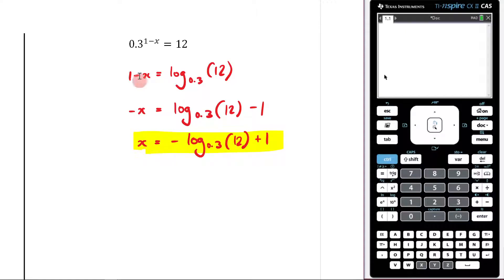Alternatively, the way that you could solve this is by taking the log of both sides. I would probably take the log base 0.3. So take log base 0.3 of both sides. So this is an alternative way of answering it.